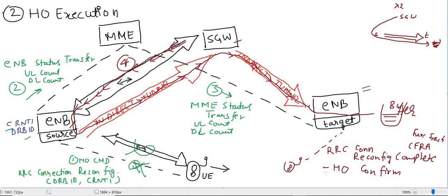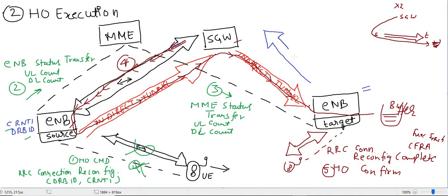This is the fifth message or procedure. After this, since DRB ID was already provided to UE, the data radio bearer is established between UE and target eNodeB. The uplink S1 bearer was already established between target eNodeB and SGW during the handover preparation message. This is the handover execution part.